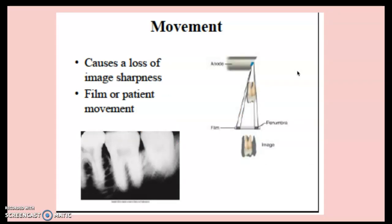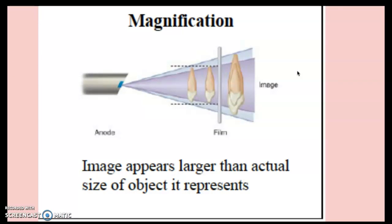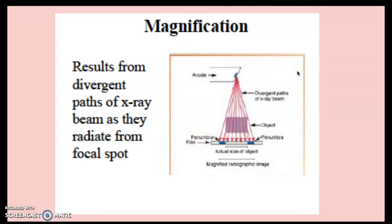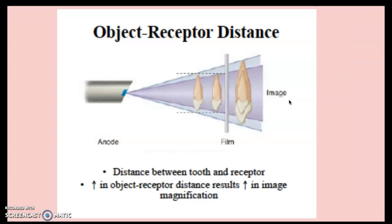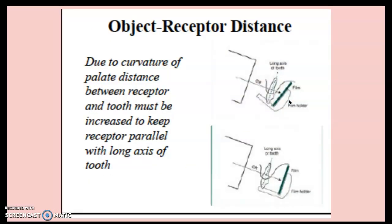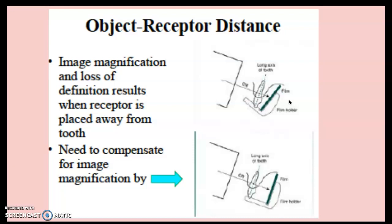Movement is another factor — if the patient moves, the film moves, or the PID moves, that can cause loss of image sharpness. Magnification is when the image appears larger than the actual size of the object it represents. Magnification results from divergent paths as X-rays radiate from the focal spot. The two influencing factors are object-receptor distance and target-receptor distance. The object-receptor distance is the distance between the tooth and the receptor. Because of the curvature of the palate, you need to keep the receptor parallel to the tooth, which results in image magnification as you move further away from the tooth.